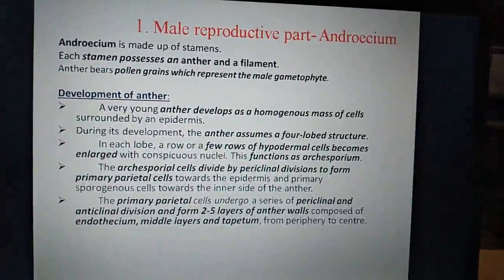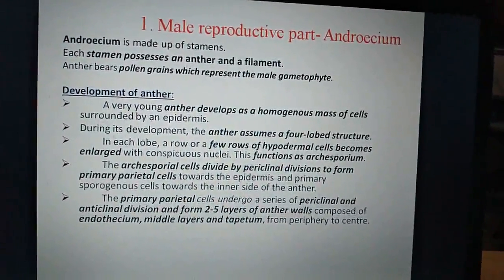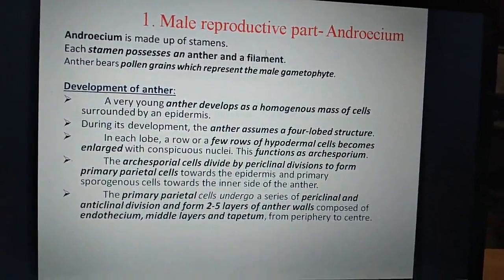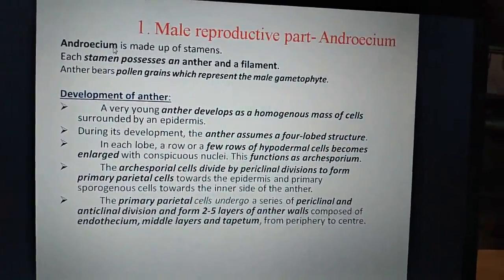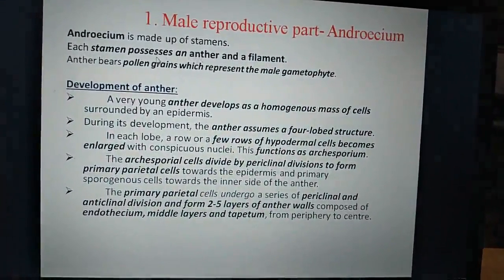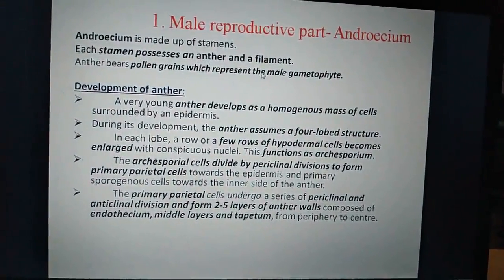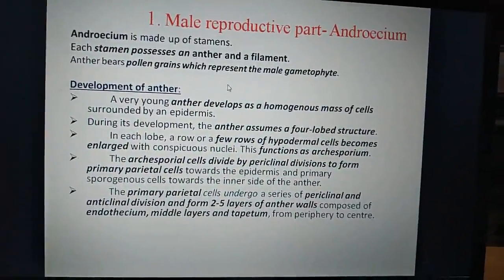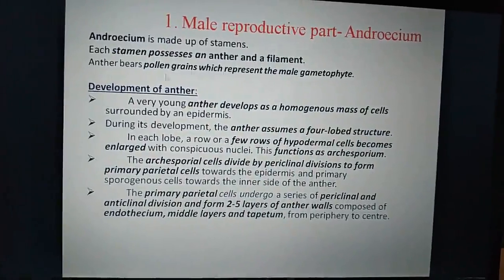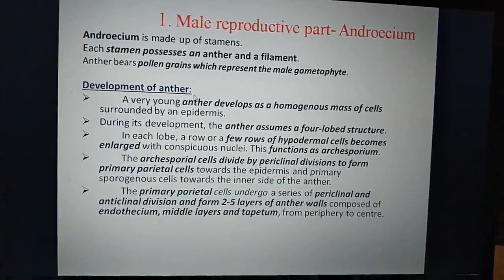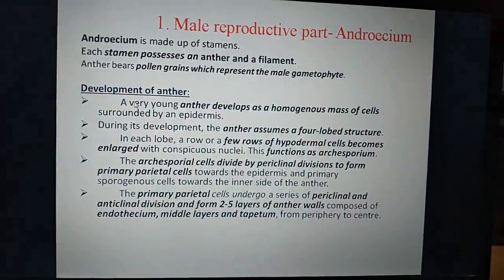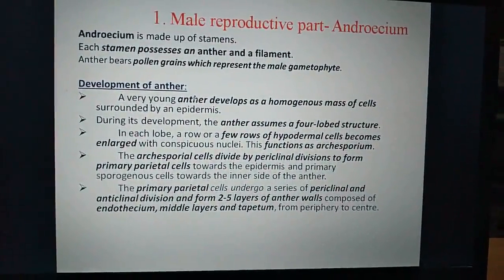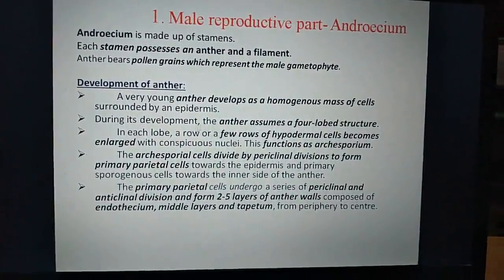We are going to discuss the development of anther from the male reproductive part, androecium. Androecium is made up of stamen. Stamen possesses anther and filament. Anther bears pollen grains which represent the male gametophyte. Every young anther develops as a homogenous mass of cells surrounded by an epidermis.